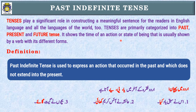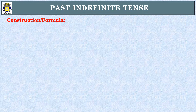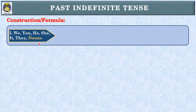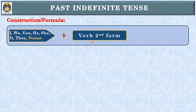What is the construction of the past indefinite tense? What is the formula? As you can see, I have written all nouns and pronouns — I, we, you, he, she, it, and all nouns. Whether the subject is a singular noun or a plural noun, if the subject is any noun or pronoun, we will use the second form of the verb.